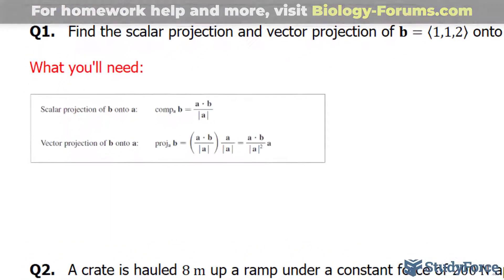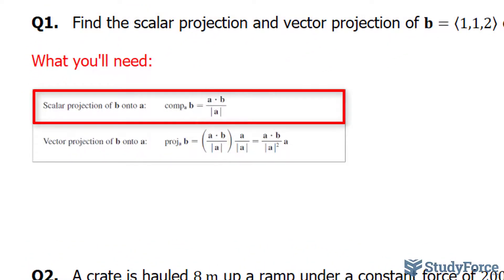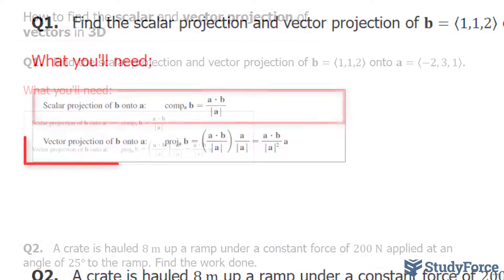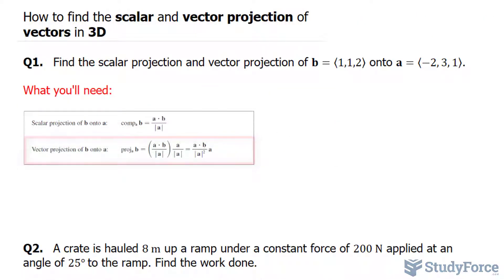As you can see underneath, the scalar projection formula is shown right here, and the vector projection formula is shown here. The main difference between the two is that when you use this formula, you'll end up with a number, whereas when you use this formula, you'll end up with a vector.